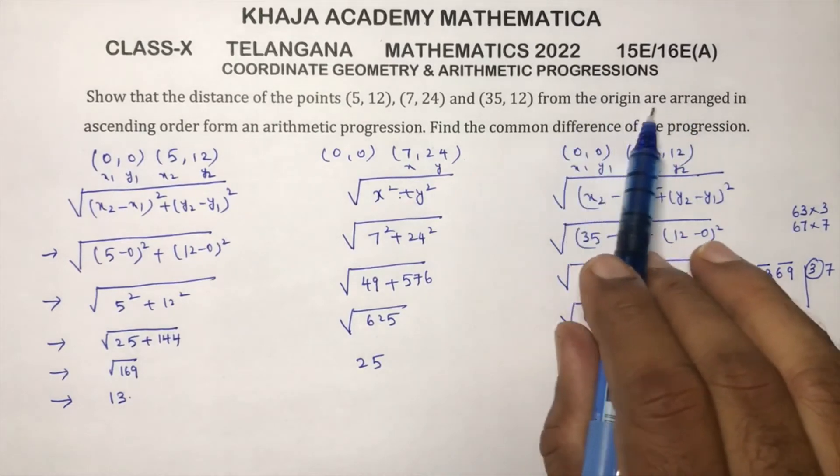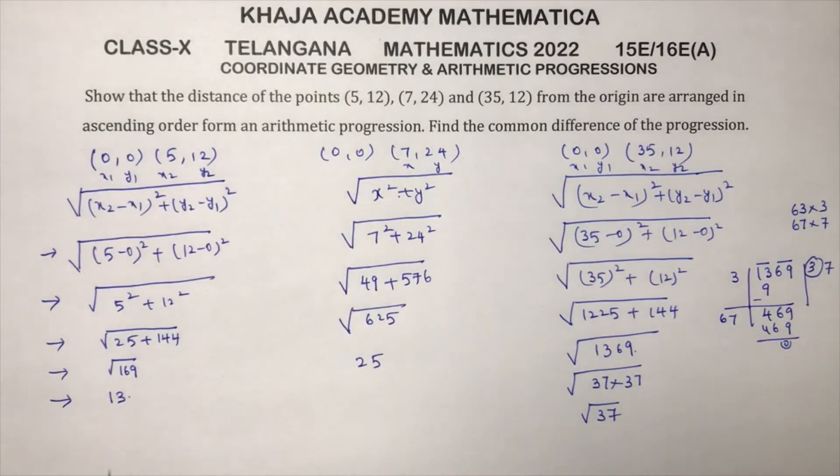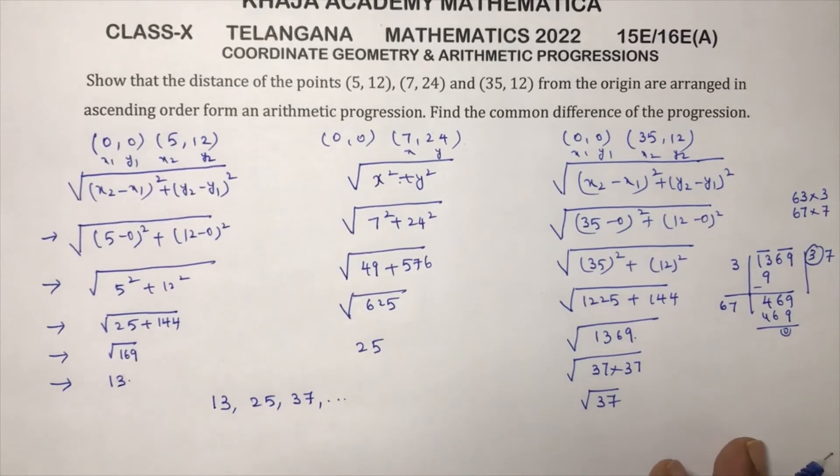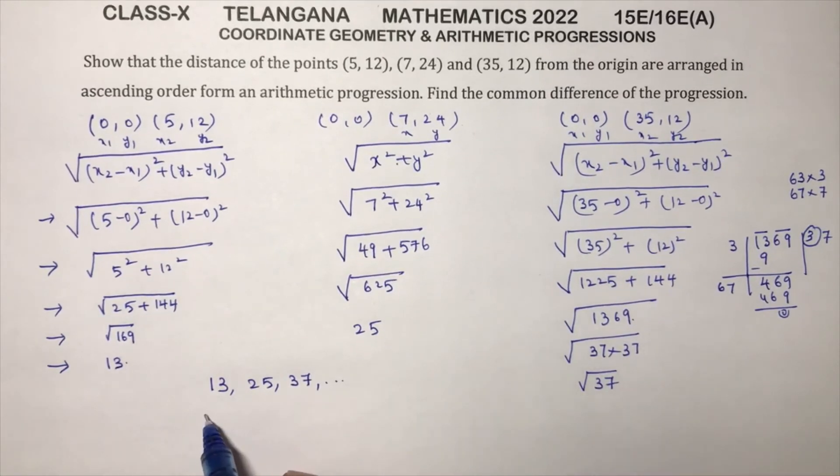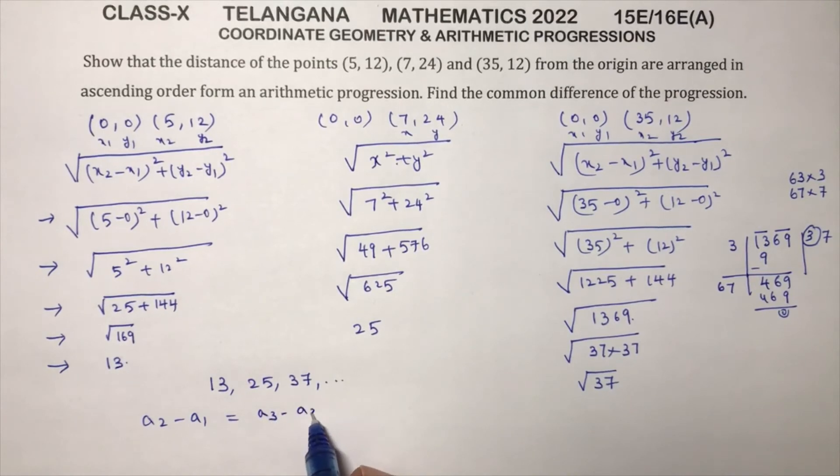Now they're asking you to show that they arrange in ascending order. So first value is 13, 25, 37. This forms an arithmetic progression. So to check whether it is in AP or not, condition is a2 minus a1 equals a3 minus a2, then it is in AP.